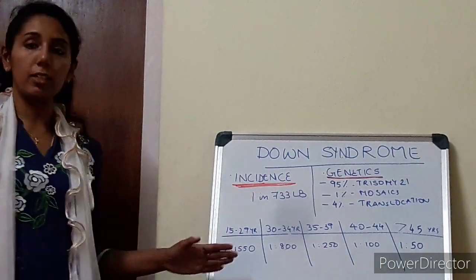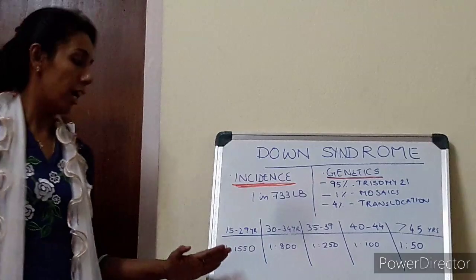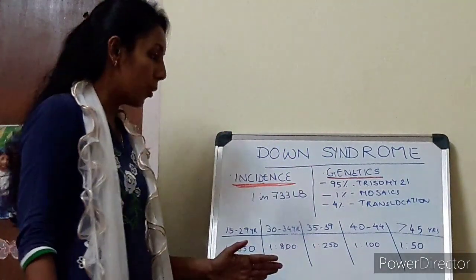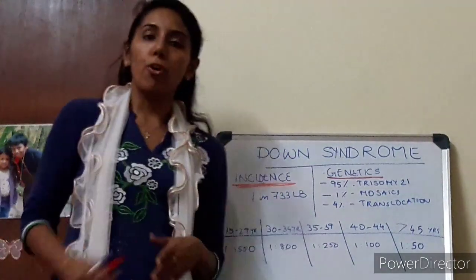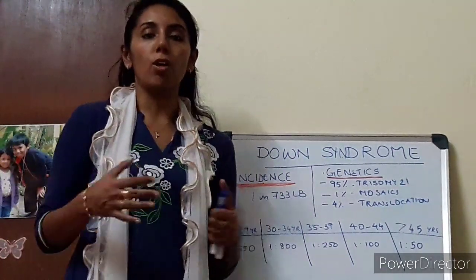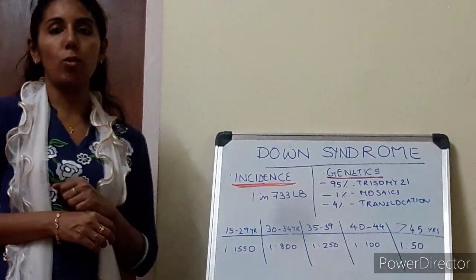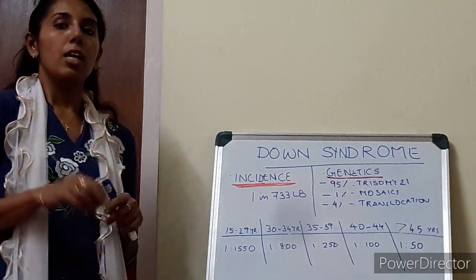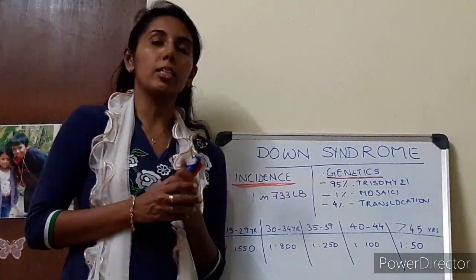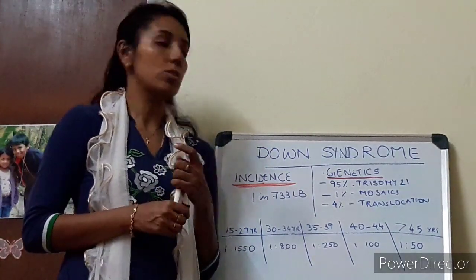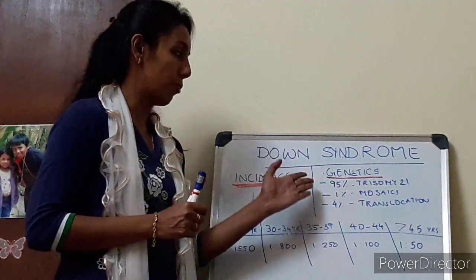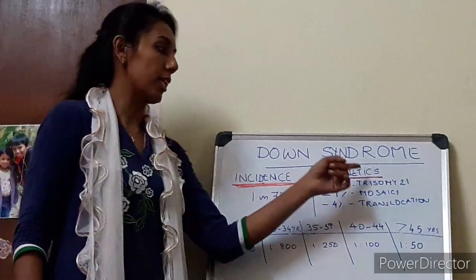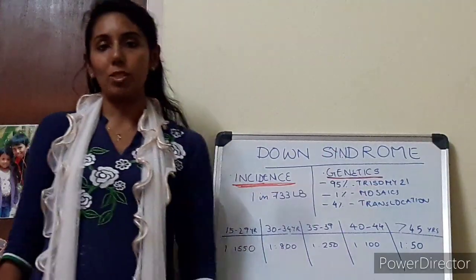As you can see from the graph mentioned here, as the age of the mother increases, the risk for having a baby with Down syndrome also increases. Why is it happening? It is generally because of certain genetic factors. 95% of cases are due to Trisomy 21.